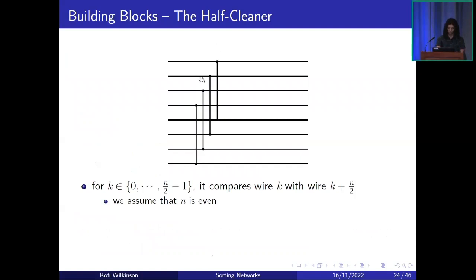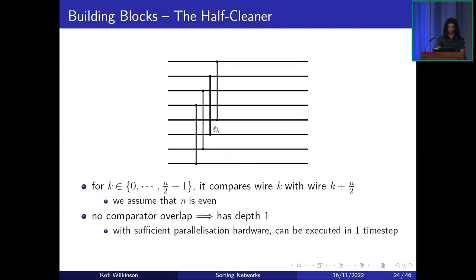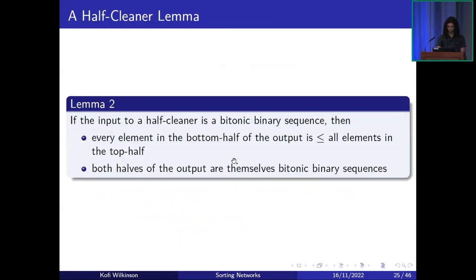Here is a sub-network called the half cleaner. We define it with k ranging from 0 to n/2 − 1 inclusive — it compares wire k with wire k + n/2, assuming n is even. Essentially it compares a value in the bottom half of the input with a corresponding value in the top half. As this network has no overlapping comparators it has depth one, so with sufficient parallelization hardware we can execute all steps in just one time step.